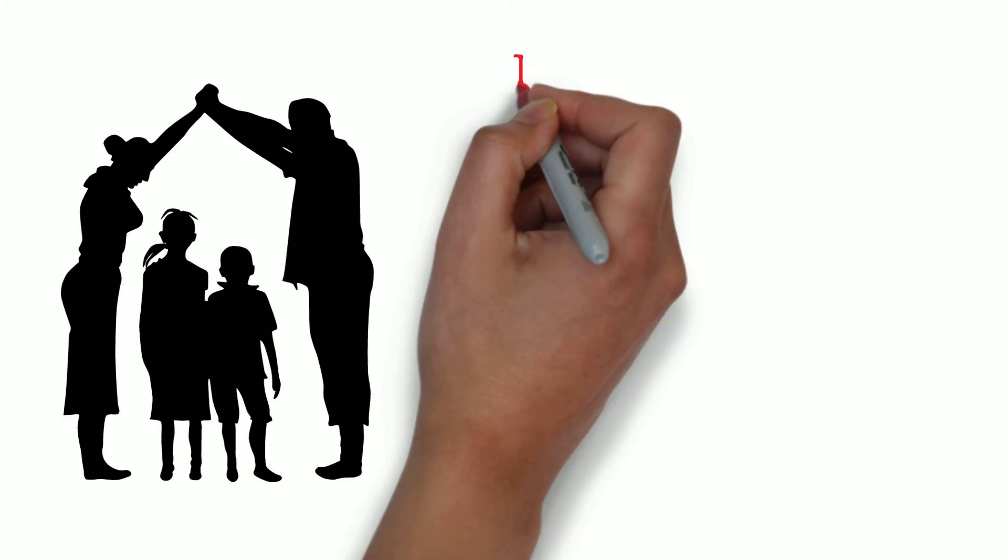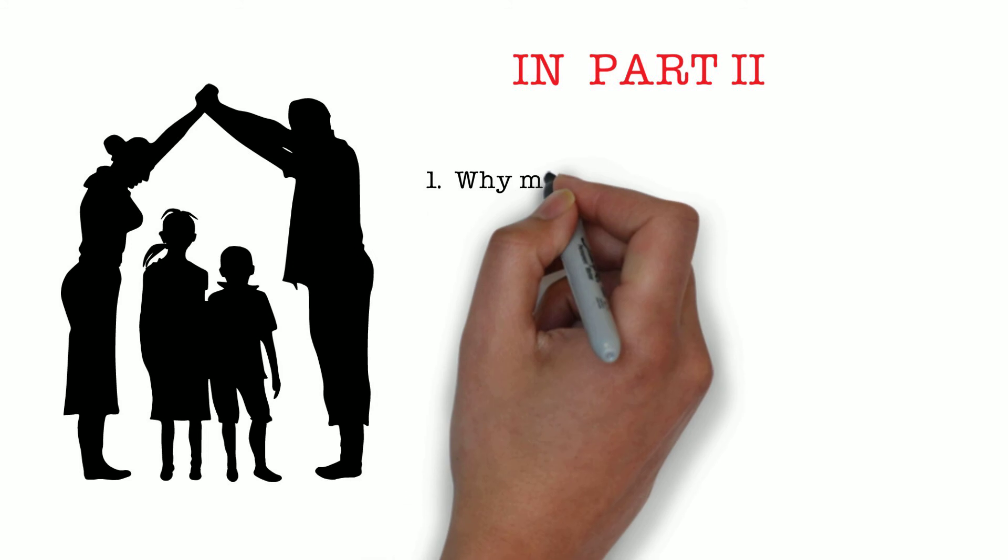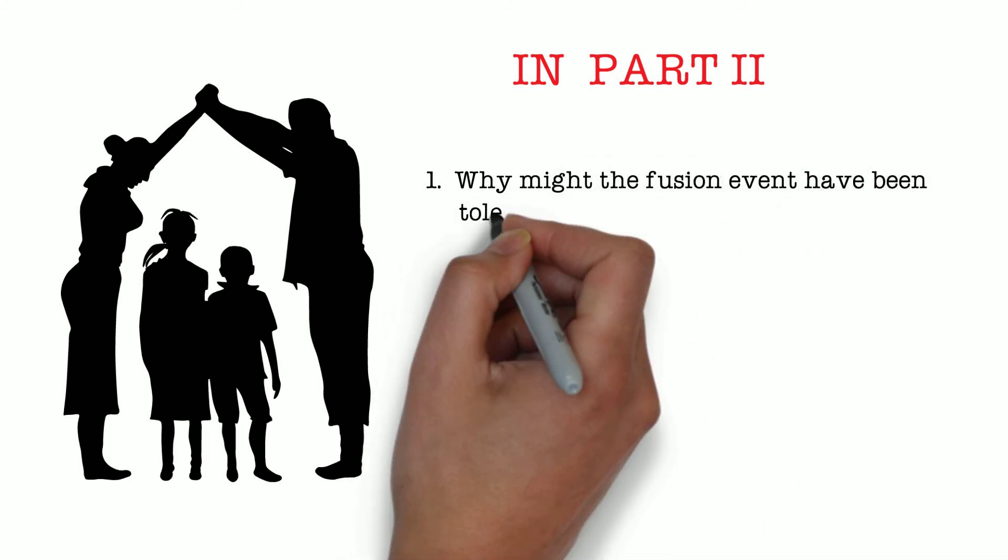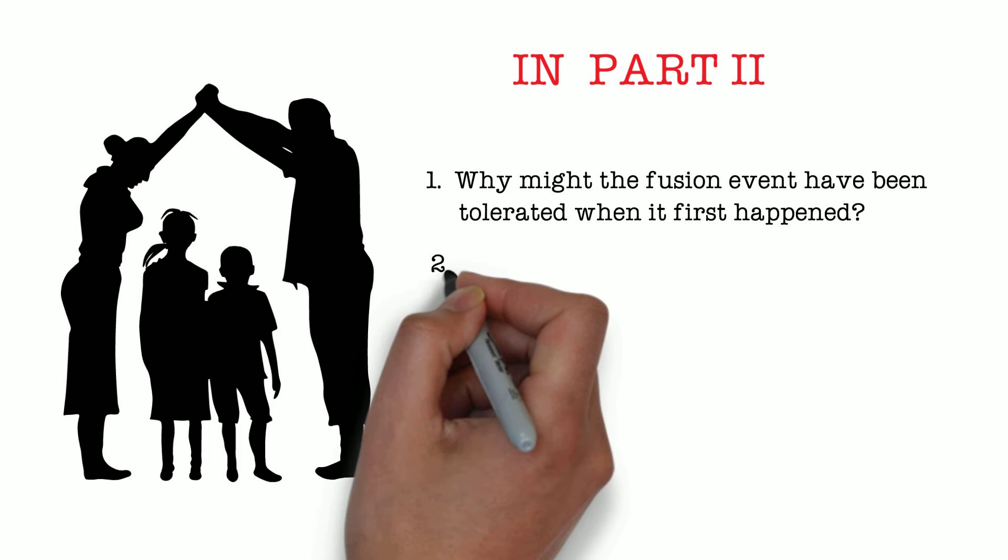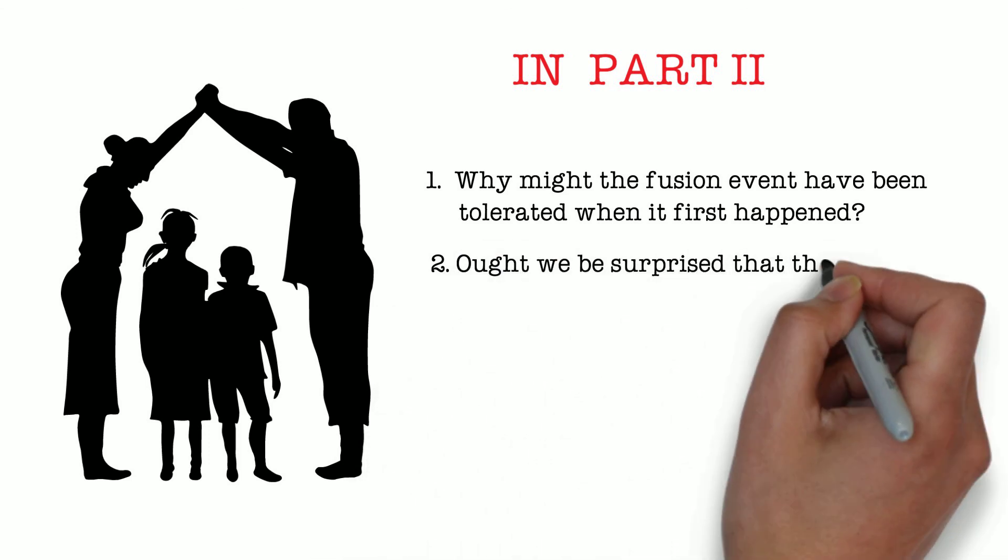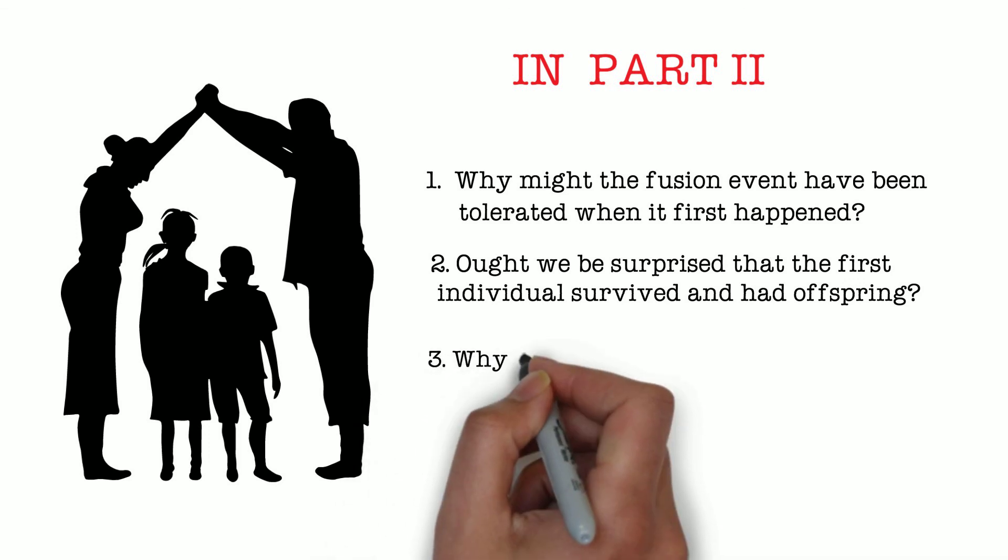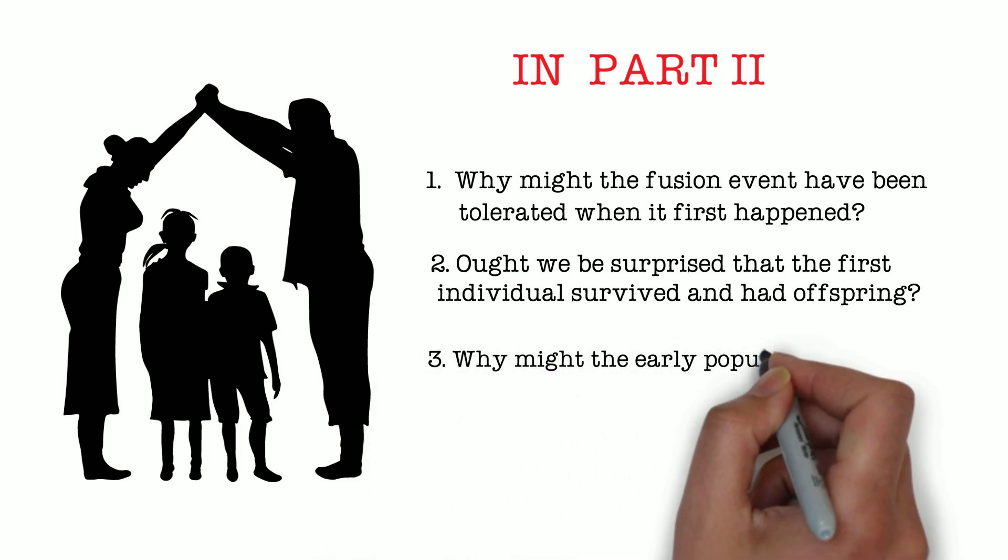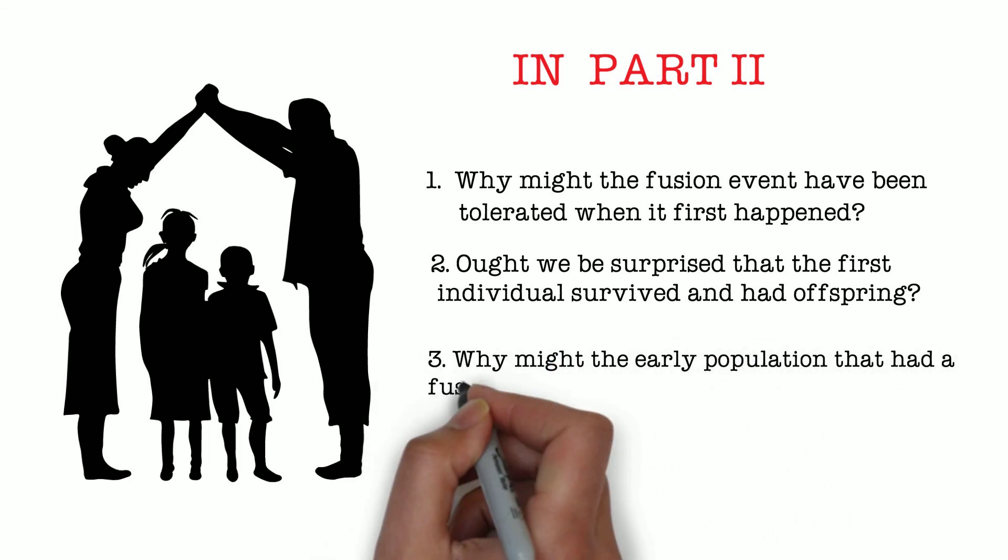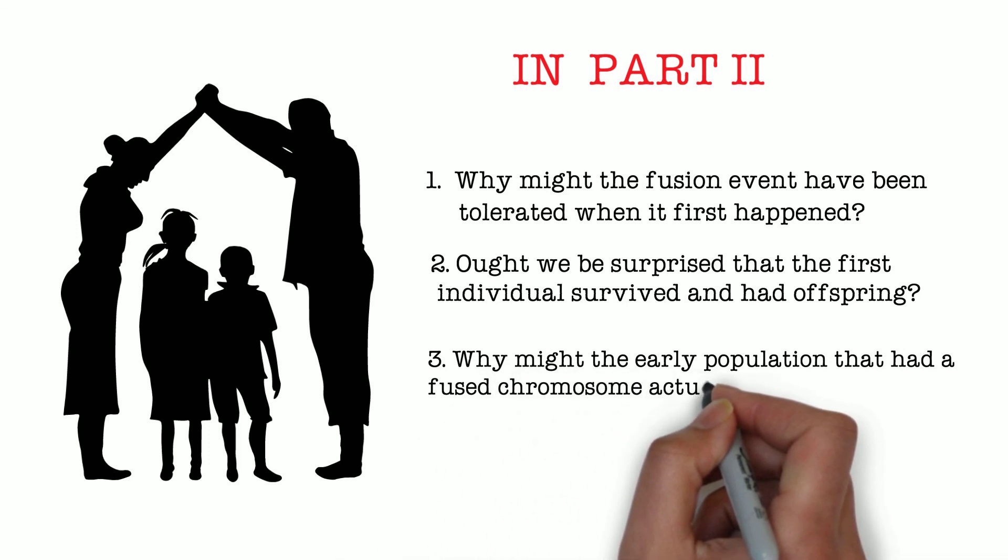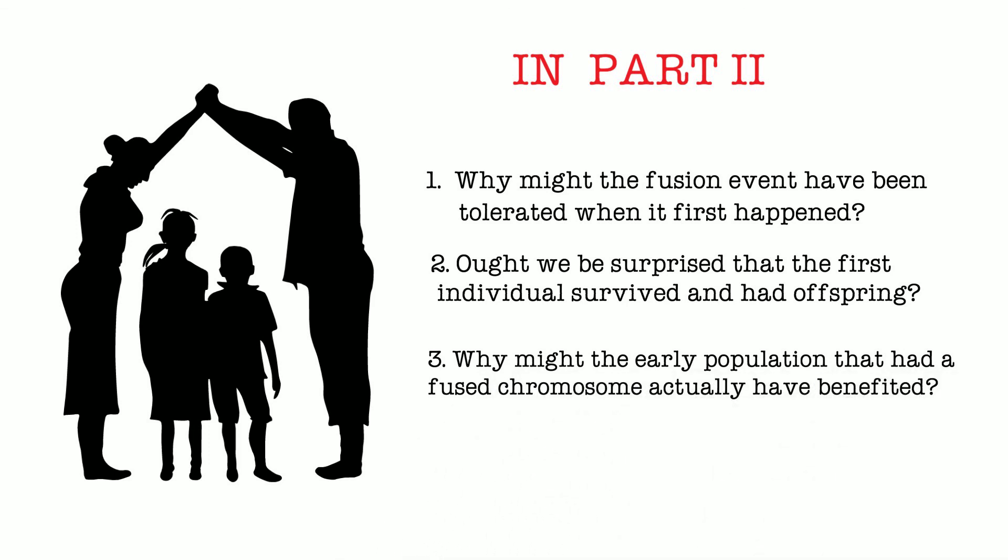In our next discussion, we're going to talk about why the fusion event may have been tolerated when it first happened. And we're going to ask the question, ought we be surprised that the first individual with two centromeres survived and had offspring? Furthermore, we'll discuss why the early population of individuals with fused chromosomes not only survived, but may actually have benefited from the event. More on that in part two.